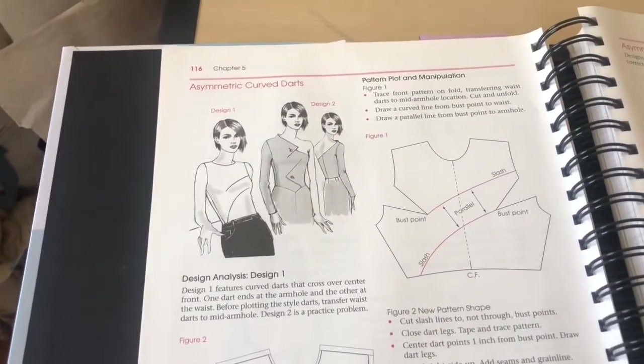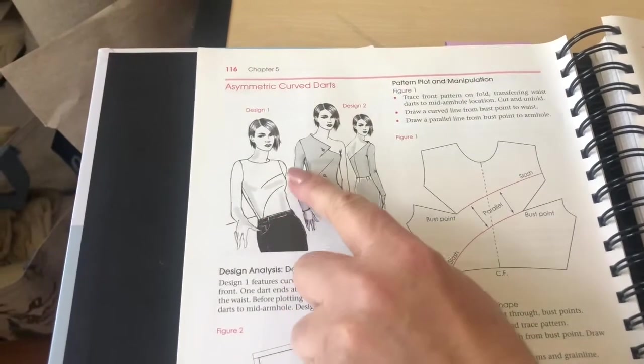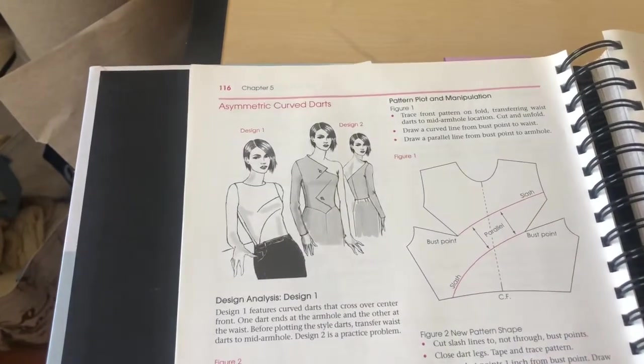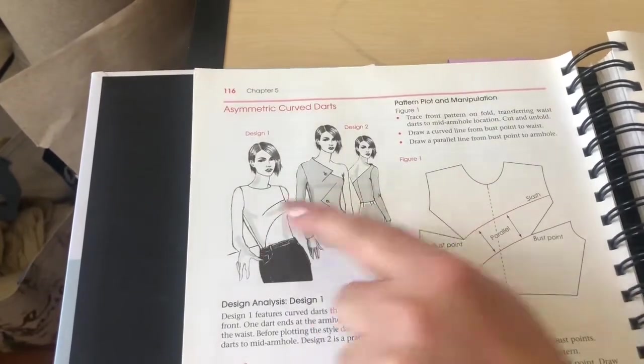When we say asymmetric darts, you can see that on this garment the darts are not repeating on both sides the same way, and at the same time they are parallel to each other.